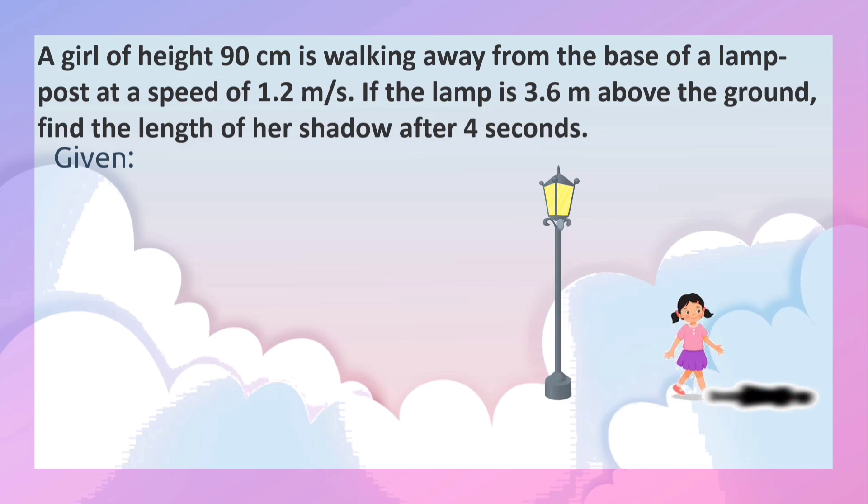Now let us collect all the given data. After 4 seconds she has moved here. This is her new position from the base of the lamppost. The given data: height of the lamppost AB is equal to 3.6 meters.